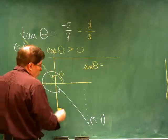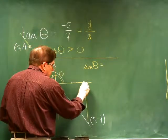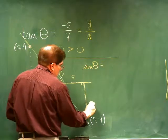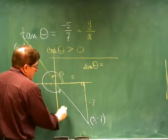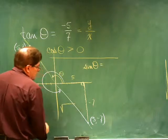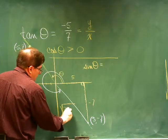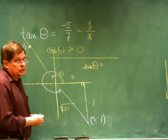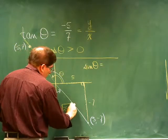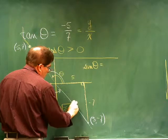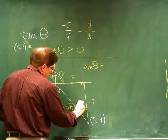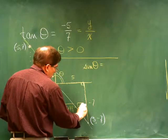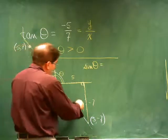This distance is five, we're thinking that this would be negative seven, and this right here is going to be 25 plus negative seven squared, which equals 74. The square root of 74.